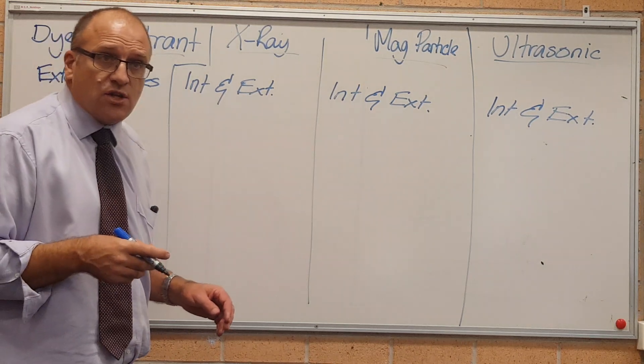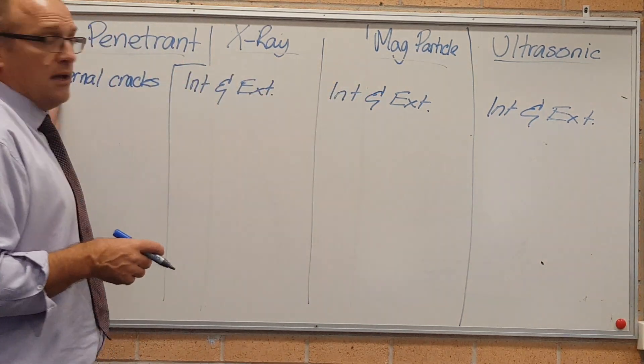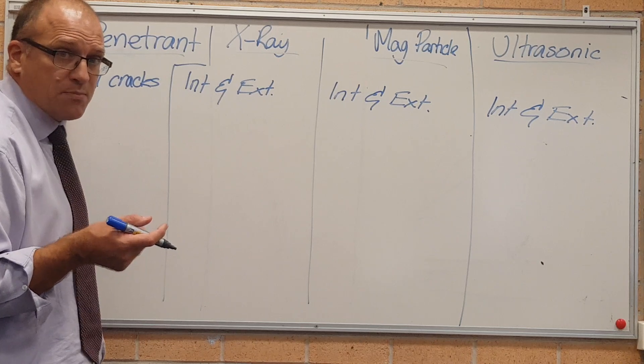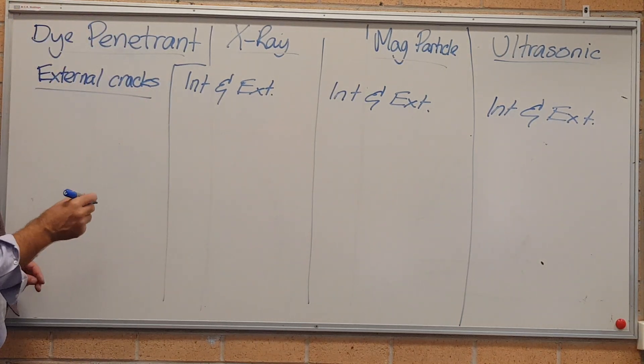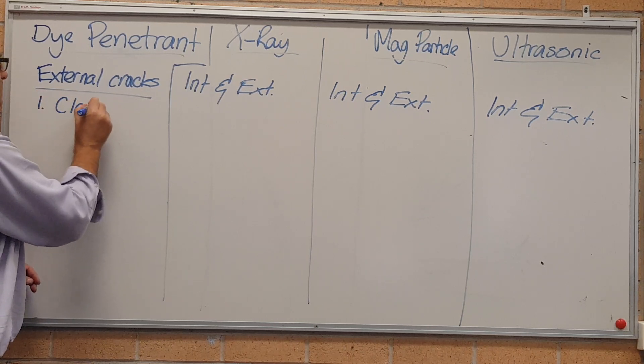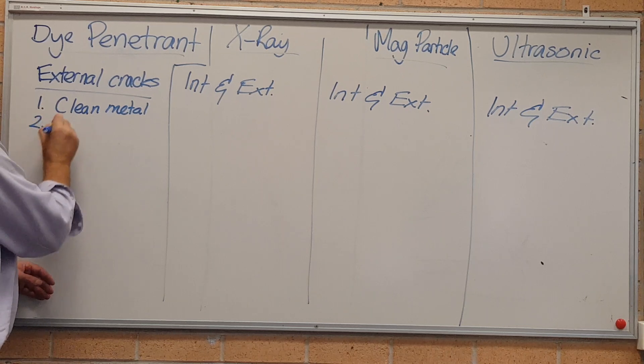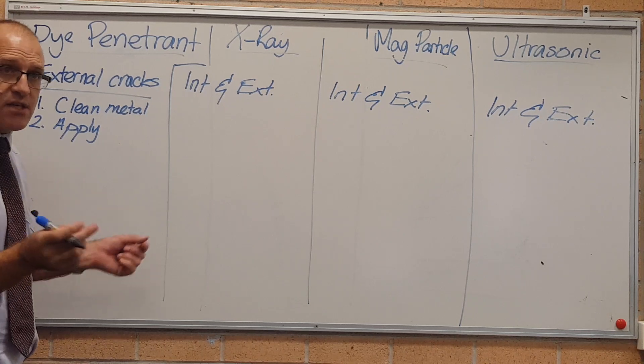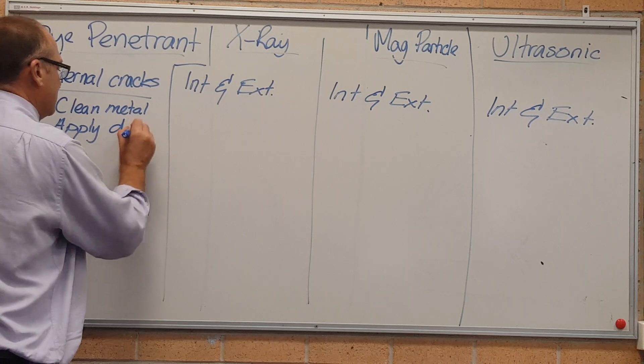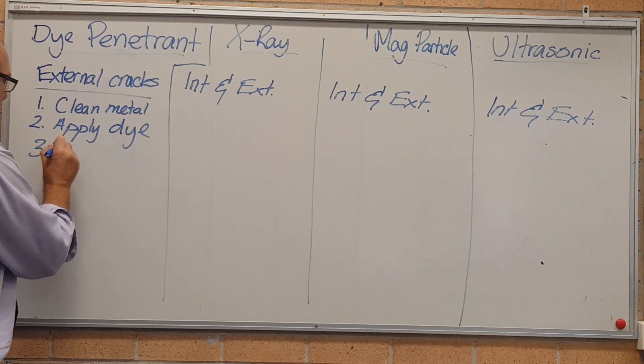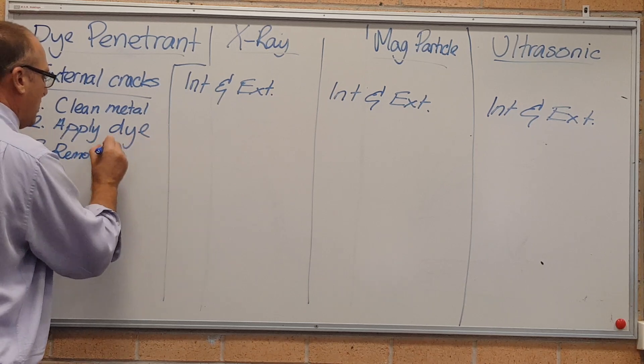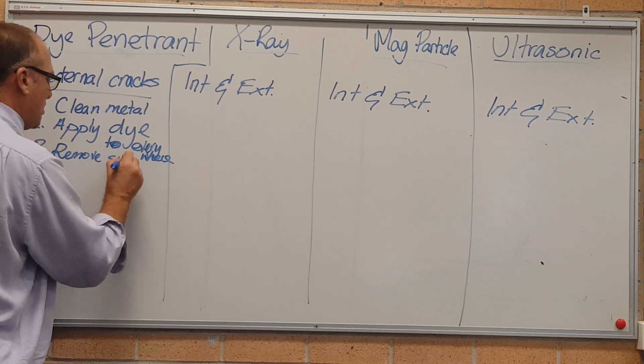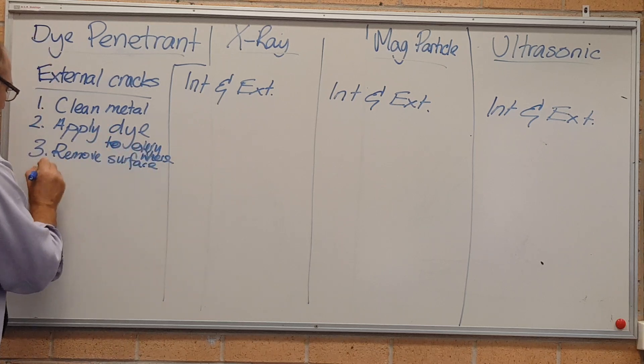The two easiest ones to do are ultrasonic and dye penetrant. I've made a separate video on YouTube for dye penetrant. I'll put a link in the comments below. A dye penetrant test is four steps. You clean the metal. You apply a dye which is a really runny, low viscosity dye that soaks through capillary action straight into every crack. You then remove the surface dye, apply dye to everything everywhere, remove the surface dye. And number four is you apply developer.